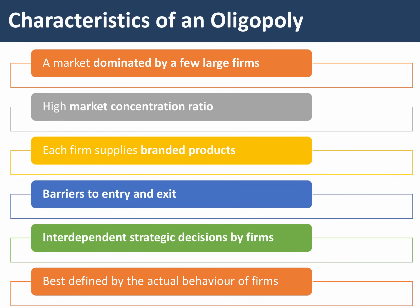The next two points are extremely important. The key decisions taken by firms in the industry — on price, on research and development, on the amount of marketing spend — are interdependent. In other words, you have to think about the likely reaction of the other firms in the industry to a decision you take. Oligopoly is a very common market structure, and it's best defined by the actual behavior of firms in the market. The kinked demand curve is just one model of oligopoly — there are several, but that's what we'll focus on in this video.